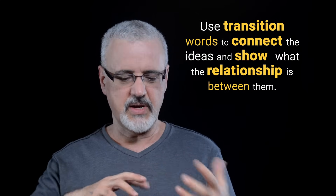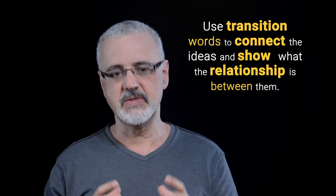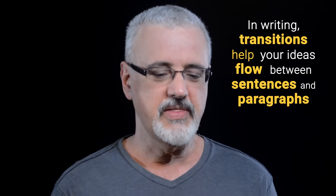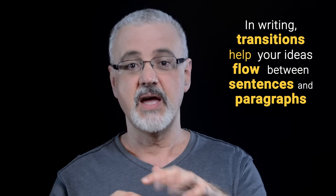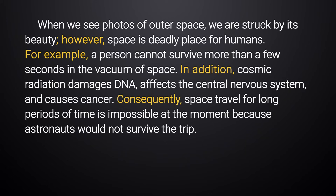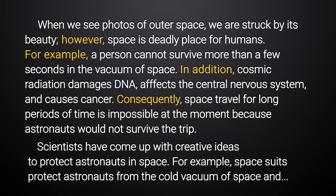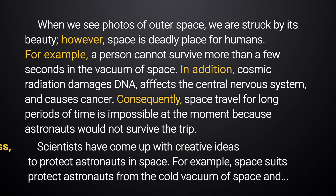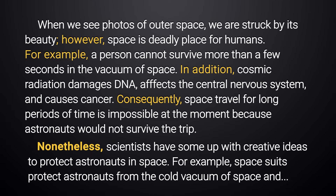Do you see how these transition words work? You get ideas that are related and use transition words to connect the ideas and show what the relationship is between them. Transition words are very useful in writing — they help make your ideas flow between sentences and between paragraphs. For example, if the next paragraph was about scientists coming up with creative ideas to protect astronauts in space, the first paragraph says space travel is impossible right now, but the next paragraph is actually saying it's not all bad news. We can use a transition here to connect the paragraphs and show the contrast.